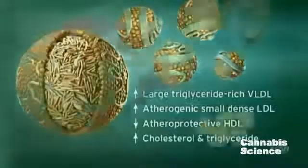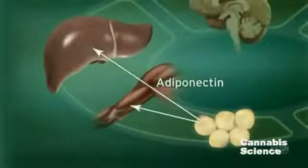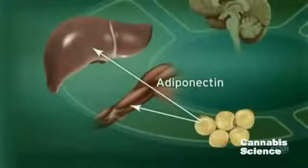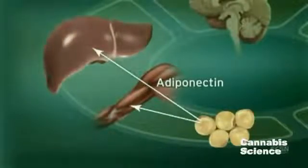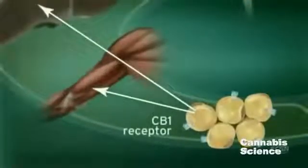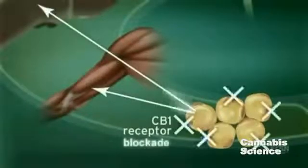Adiponectin, another hormone secreted by adipocytes, regulates lipid and glucose metabolism. Adiponectin is believed to regulate fatty acid oxidation in muscle and liver, thus improving insulin sensitivity. CB1 receptor stimulation in adipocytes reduces adiponectin, while CB1 blockade increases adiponectin synthesis.